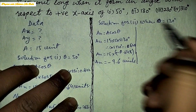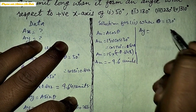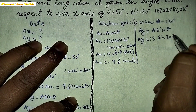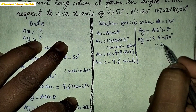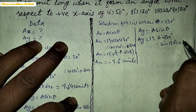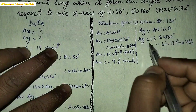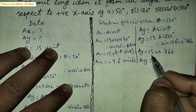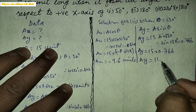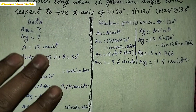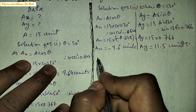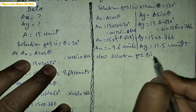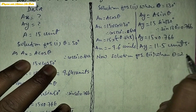For the Y component, Ay is equal to A sin theta, so Ay is equal to 15 into sin 130°. The value of sin 130° is 0.766, so Ay will be equal to 15 into 0.766, giving Ay equal to 11.5 units.